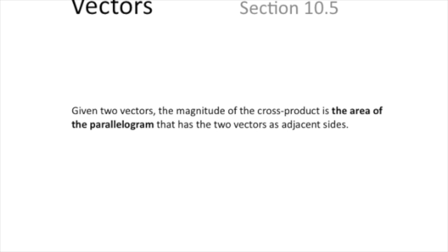If you have two vectors, the magnitude of the cross product is the area of the parallelogram that has the two vectors as adjacent sides. So if you have two vectors set tail to tail, that makes an angle and side lengths you know — you can finish that parallelogram. The magnitude of the cross product of those two vectors is the area of the parallelogram.